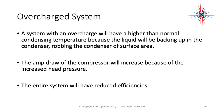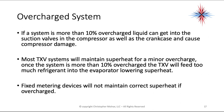An overcharged system has significant differences. A system with an overcharge will have a higher than normal condensing temperature because liquid will be backing up into the condenser, robbing it of surface area. The amp draw of the compressor will increase because of the increased head pressure, and the entire system will have reduced efficiencies. If a system is more than 10% overcharged, liquid can get into the suction valves and crankcase causing compressor damage. Most TXV systems will attempt to maintain superheat for a minor overcharge, but once more than 10% overcharged, the TXV will feed too much refrigerant into the evaporator, lowering superheat. Fixed metering devices will not maintain correct superheats if overcharged.